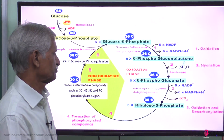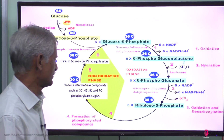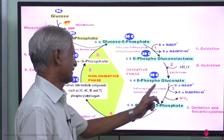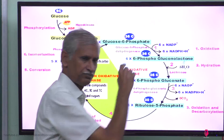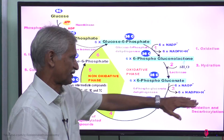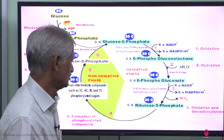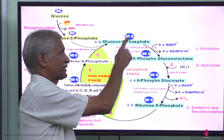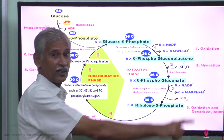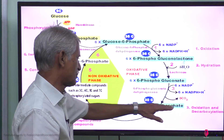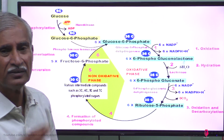On 6-phosphogluconate, another enzyme — 6-phosphogluconate dehydrogenase — acts. It again removes hydrogen, NADP enters, and becomes NADPH plus protons. Then 6 molecules of carbon dioxide are released. With 30 carbons remaining, one carbon per molecule is lost as CO2, forming ribulose 5-phosphate. This completes the oxidative phase of the pentose phosphate pathway.